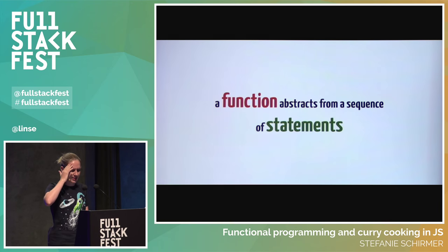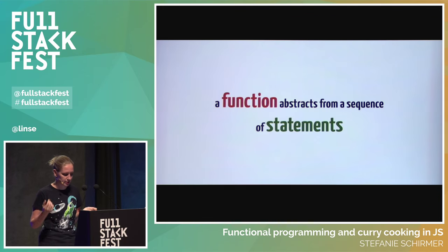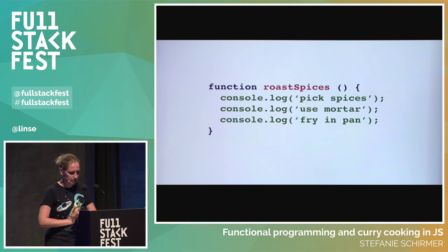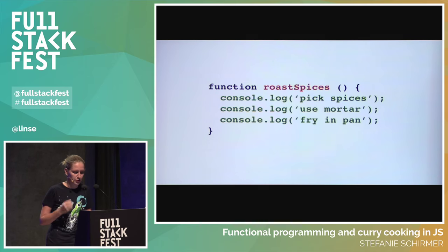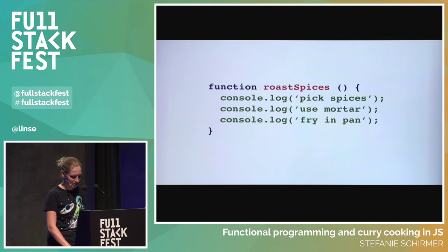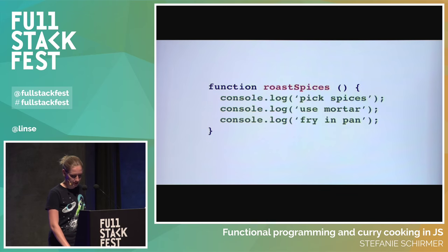The next more abstract building block of a program is statements and blocks of statements. To abstract from a block and give it a name, we create a function — we all know that. When we call the function, we can pass values into it to make them available in the function statements. Function abstraction is everywhere and it's a bit undervalued, because it's the main means of code organization. It's at the core of functional programming — that's why it's called like that. We build toolboxes of functions, assign them to variables, pass them to other functions, and combine them.